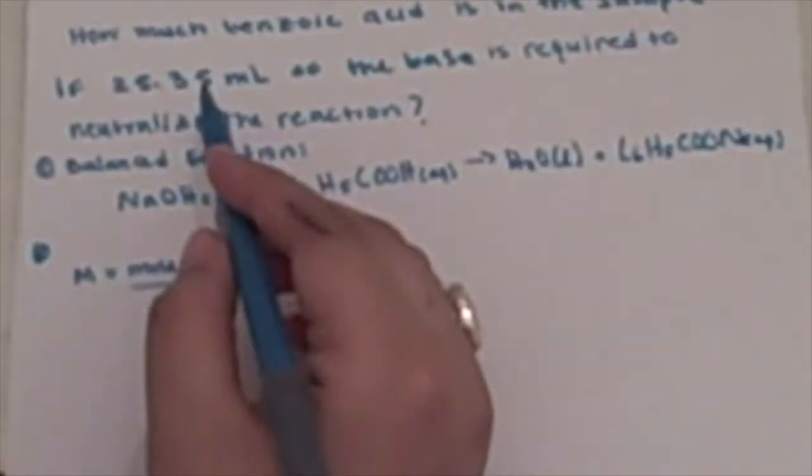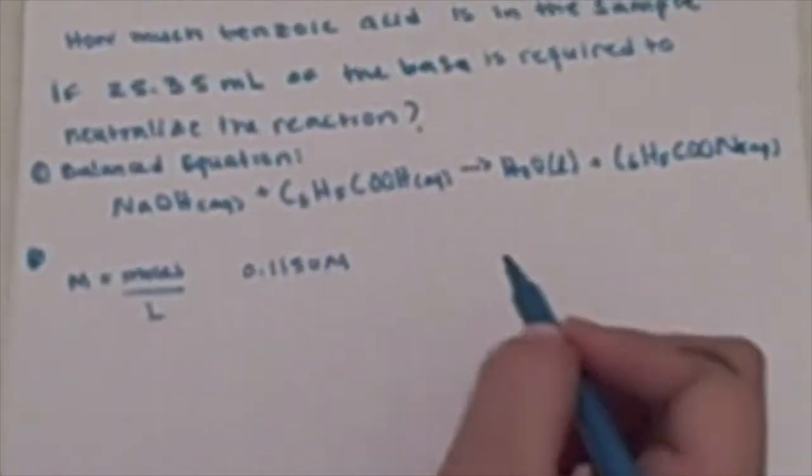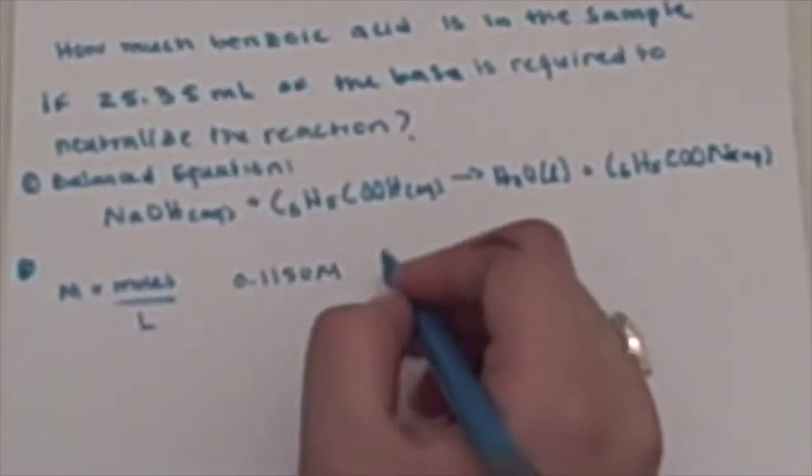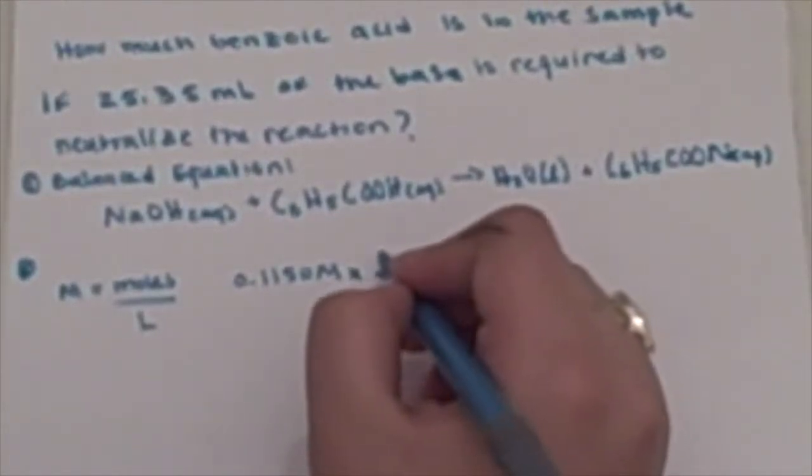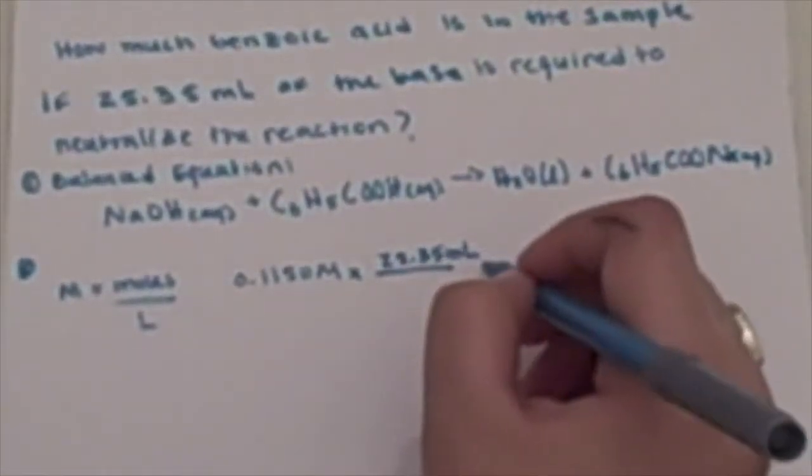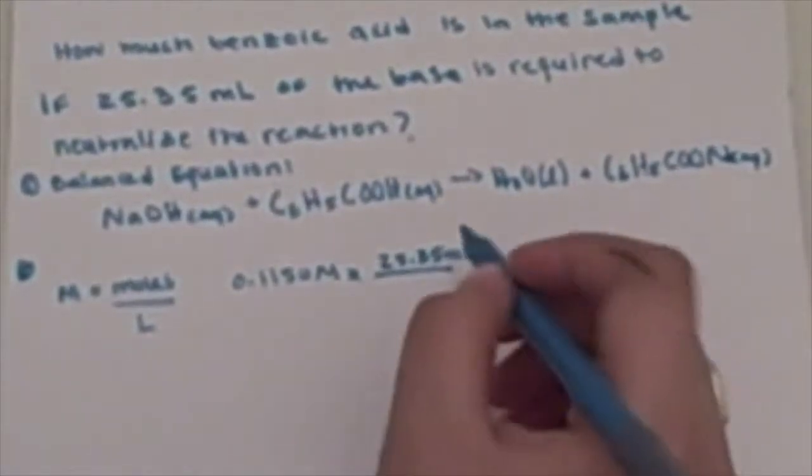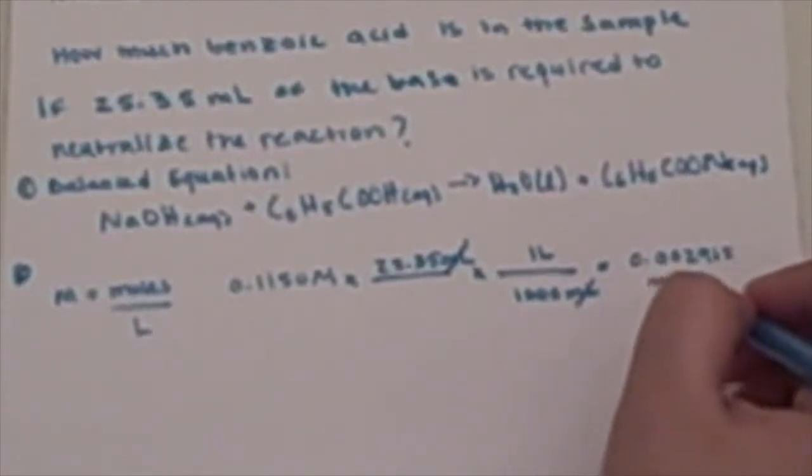If we use the information that we have, we have 0.1150 molarity of NaOH. We also have our volume, which is 25.35 milliliters. We're going to have to convert that to liters in order for these two to cancel out. We know that 1,000 milliliters equals one liter. When we cancel all of these out, we're left with moles. This should give us 0.002915 moles of NaOH.